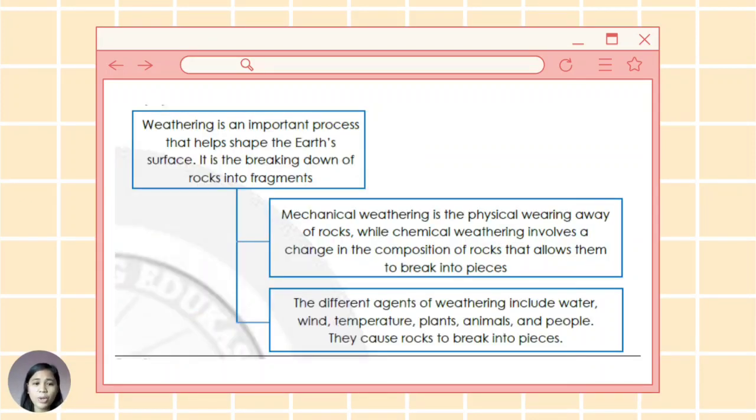To summarize our lesson, again, weathering is an important process that helps shape the earth's surface. It is the breaking down of rocks into fragments. Mechanical weathering is the physical wearing away of rocks, while chemical weathering involves a change in the composition of rocks that allow them to break into pieces. The different agents of weathering include water, wind, temperature, plants, animals, and people. They cause rocks to break into pieces.